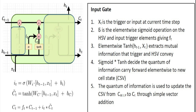As you can see in the input gate diagram, you have two inputs xt and the hidden state. xt is the trigger at the current time step and sigmoid is the element-wise operation on HSV and the input trigger, giving ft. The element-wise tanh of ht-1 and xt extracts the mutual information that trigger and HSV convey. Sigmoid multiplied by tanh decides the quantum of information carried forward to the new cell state vector CSV. The quantum of information updates CSV from CWIP to ct through simple vector addition. Since this is done using simple addition, the magnitudes of ct elements can become very large, but this is not a problem.